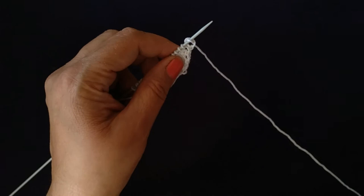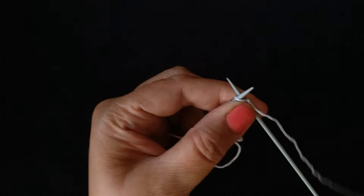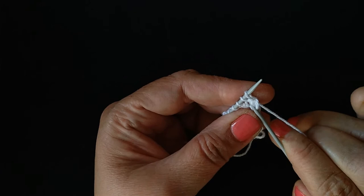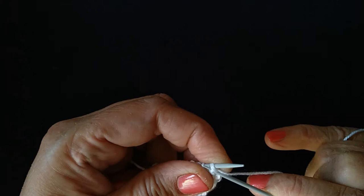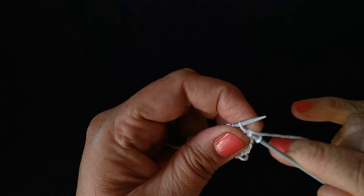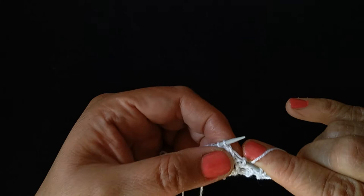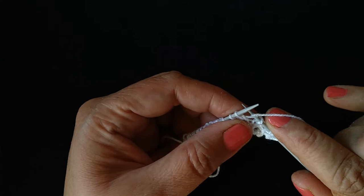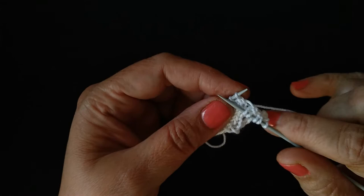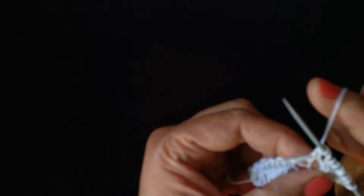9th row: K2 together, yarn forward, K4 and don't drop that stitch from left hand needle, yarn forward, K2, M1, increase stitch then knit 2, yarn forward and K2 together. 10th row: purl all.